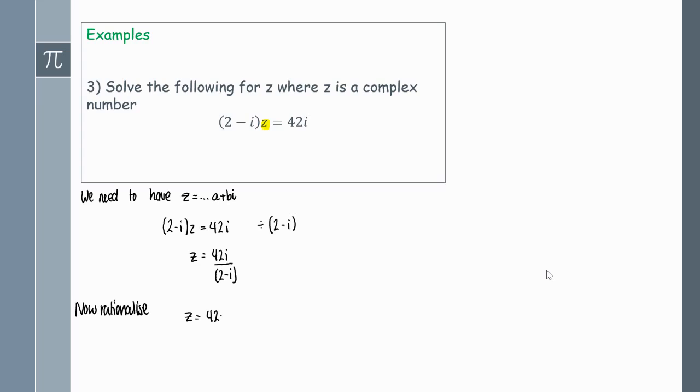We get z equals 42i times 2 plus i over the denominator. I'm going to multiply my denominator by 2 plus i. On the numerator we'll get 42 times 2 which is 84i, then 42i times i which will be 42i squared. On the denominator we'll get 2 times 2 is 4, and then minus i times i which will give me minus i squared.